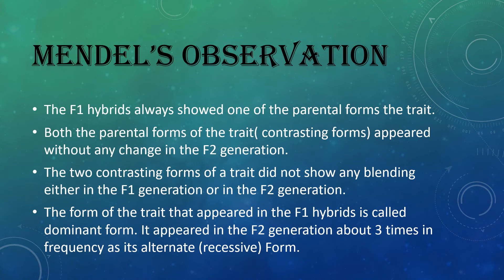The trait which appeared in the F1 generation is called the dominant form — dominant means the character which is expressed. The character which is not expressed and remains hidden is called the recessive character.